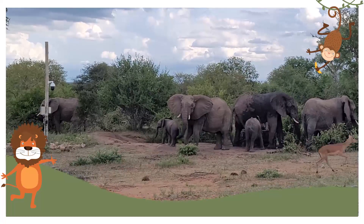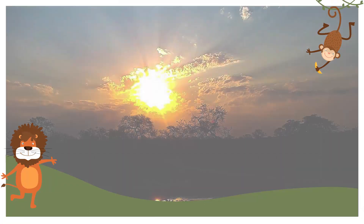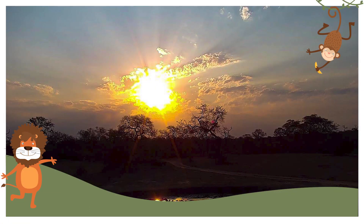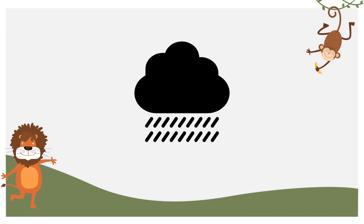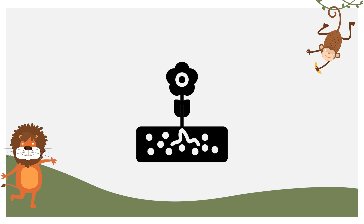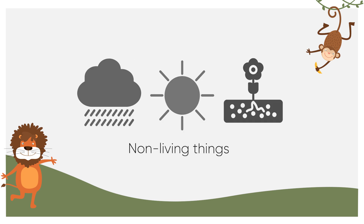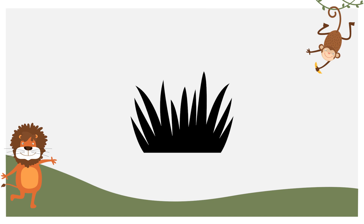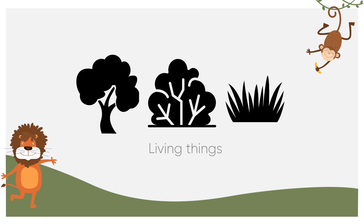Out in nature, like we see on Africam, it all depends on all of these things working together to allow certain animals to live in certain environments. They all start predominantly with rain, sunshine, and soil — those would be some of the non-living things. Then of course you have things like grass, trees, and shrubs.